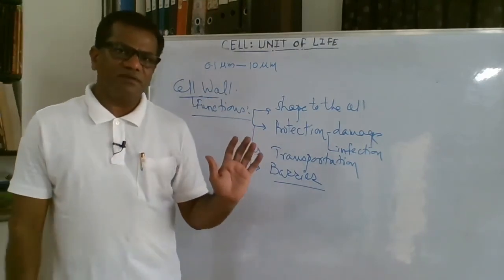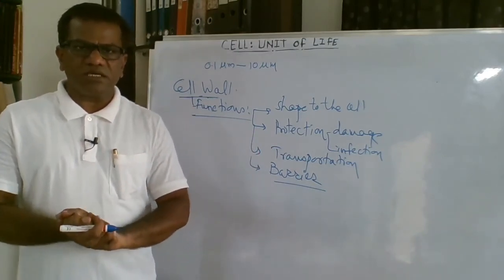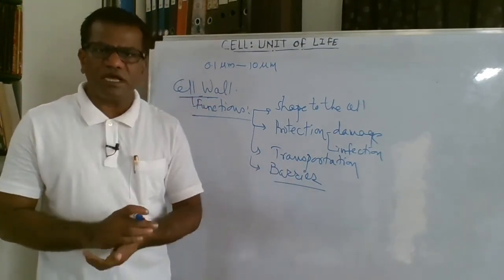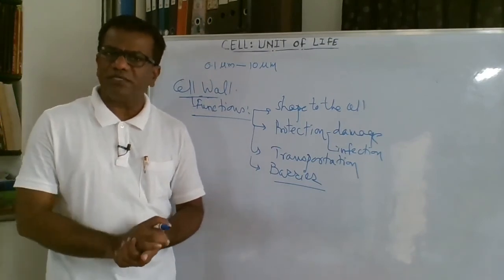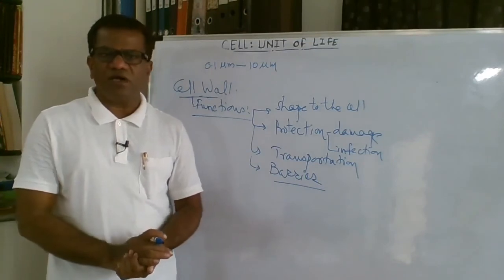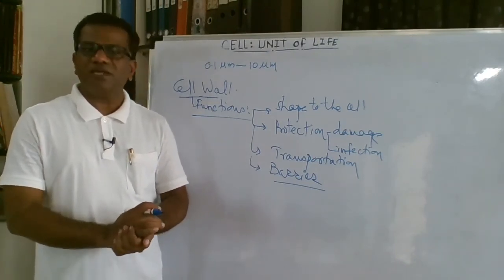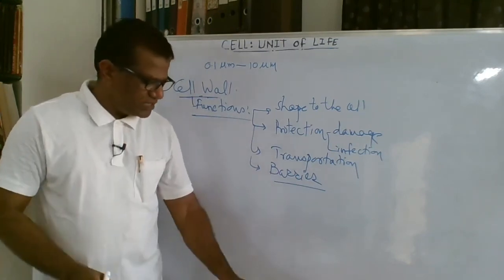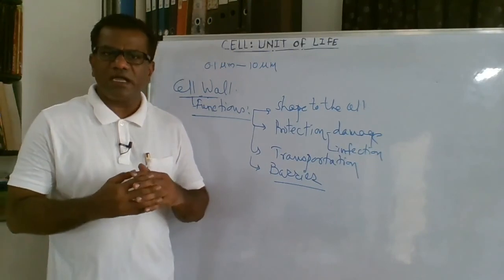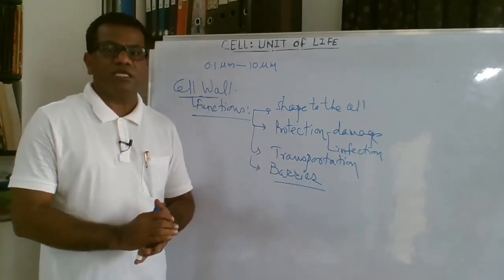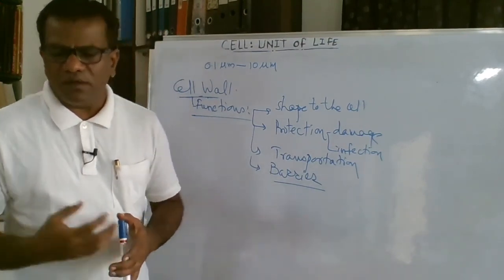Animals do not have a cell wall and therefore have to take shelter in caves, trees, or houses to survive heat, rain, and winter. But plants stand in one place forever and can bear all types of climatic conditions because they have a cell wall that protects them. This is a big difference between plant cells and animal cells. This was all about the cell wall — the envelope in prokaryotes and the cell wall in eukaryotes. Now we will discuss the plasma membrane.